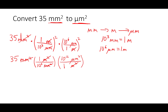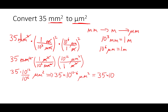We are almost done. All we need to do is figure out the actual number. So: 35, up top we have times 1 times 10 to the 12, divided by 10 to the 6. Our units are going to be micrometers squared. We can simplify 10 to the 12 over 10 to the 6 — it becomes 35 times 10 to the 12 minus 6, because we're dividing, which is then equal to 35 times 10 to the 6 micrometers squared.